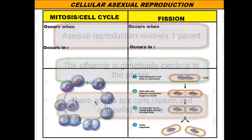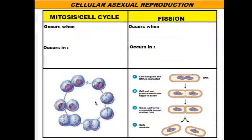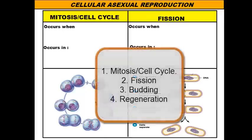There are four different types of asexual reproduction methods we're going to discuss today: mitosis in the cell cycle, fission, budding, and regeneration.